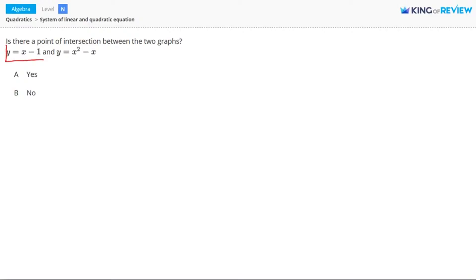We have an equation for y, y equals x minus 1. Now let's substitute x minus 1 into the second equation for y, like this. Now we have x minus 1 equals x squared minus x.